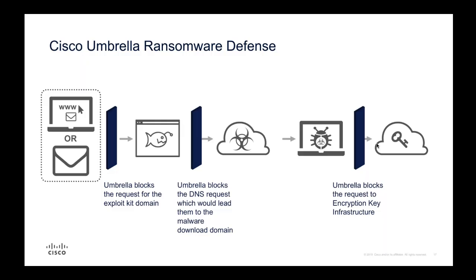Where does Umbrella fit into the attack picture? Umbrella blocks the request to the exploit domain — whether you click a malvertising link or an email that initiates a DNS request toward a domain hosting an exploit, we will block that. Umbrella also blocks the DNS request that would lead to the malware download. If an infected device tries to reach command and control infrastructure to download a payload, we identify it as a malicious domain and block it. Umbrella also blocks requests to the encryption key infrastructure.